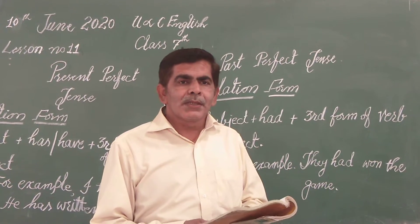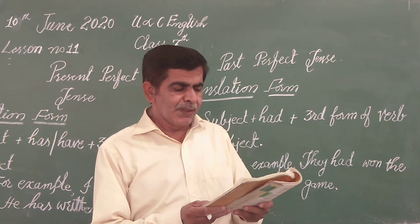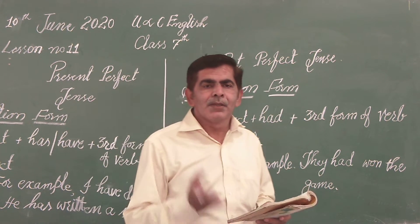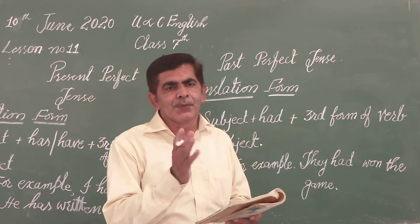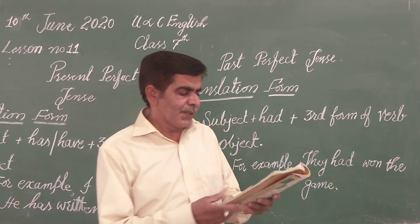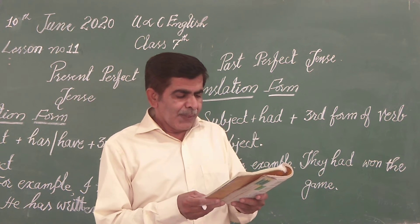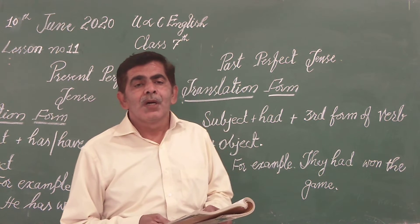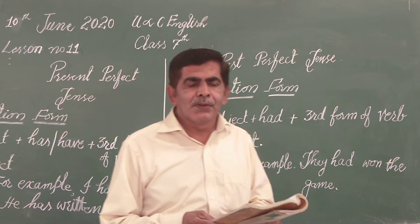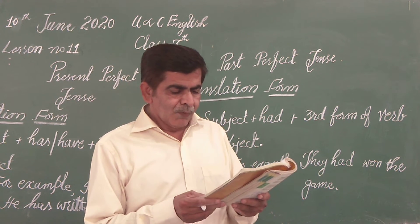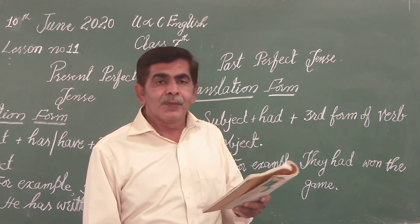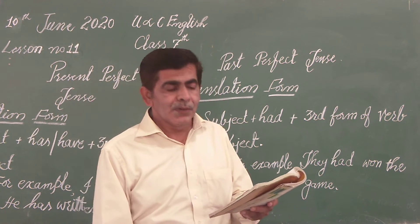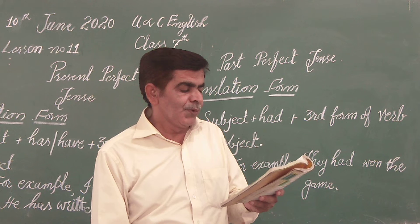Exercise, page number 147, question number 3. First sentence: 'I sewed the dress' — now in present perfect: 'I have sewed the dress. Would you like to try it on?' So 'I have sewed the dress' uses 'have' with the third form of the verb.